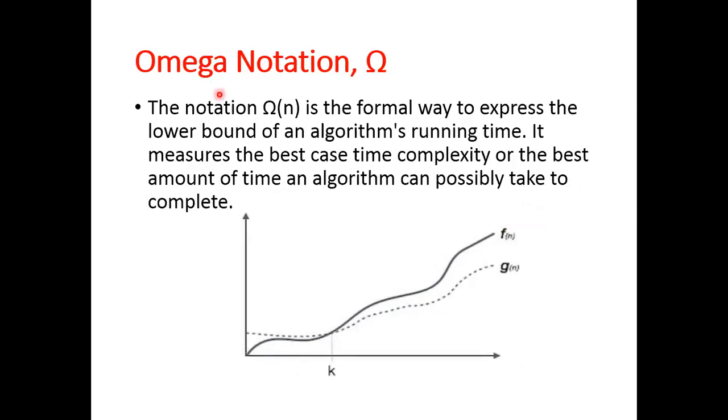Second is Omega notation. The notation Ω(n) is the formal way to express the lower bound of an algorithm's running time. It measures the best case time complexity or the best amount of time an algorithm can possibly take to complete. This is Omega notation.